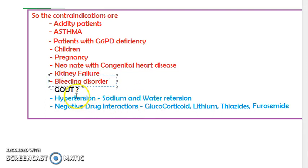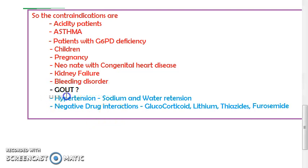In prolonged use you will have bleeding disorder, so don't give aspirin to people who already have a bleeding disorder. For gout, this is the uricosuric effect — in low doses aspirin causes retention of uric acid, while in high doses it causes excretion of uric acid.